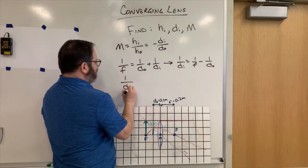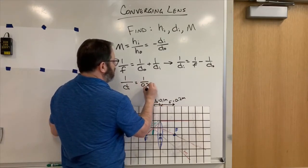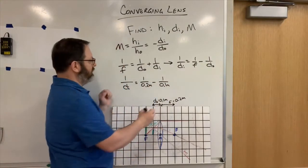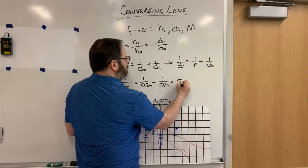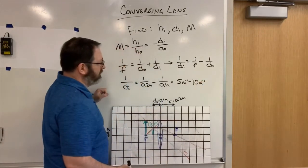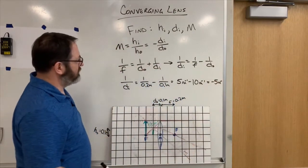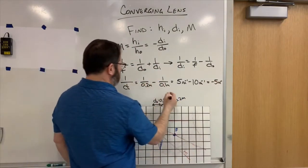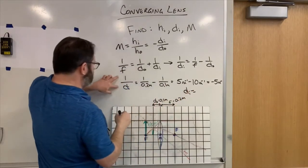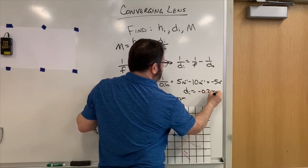So 1 over the distance to the image is 1 over 0.2 meters minus 1 over 0.1 meters. So this is 5 inverse meters minus 10 inverse meters, which is minus 5 inverse meters. So then if I take 1 over this side and 1 over that side, I get distance to the image equals 1 over minus 5, which is minus 0.2 meters.